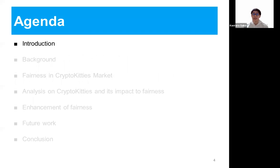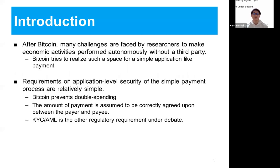I would like to start with the introduction. After Bitcoin, many challenges are faced by researchers to make economic activities performed autonomously without a third party. An example use case of Bitcoin is a simple application to conduct payments. In this case, requirements on application level security of the simple payment process are relatively simple. In the case of Bitcoin, it prevents the double spending problem. When users trade something, the amount of payment is assumed to be correctly agreed upon between payer and payee.